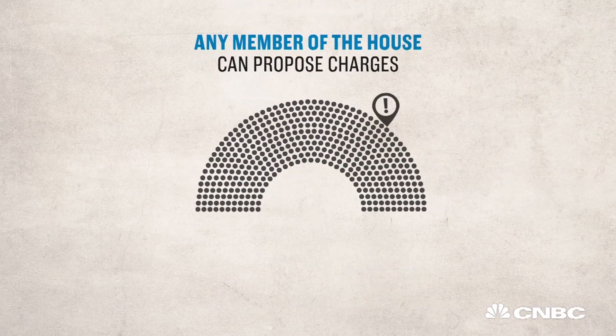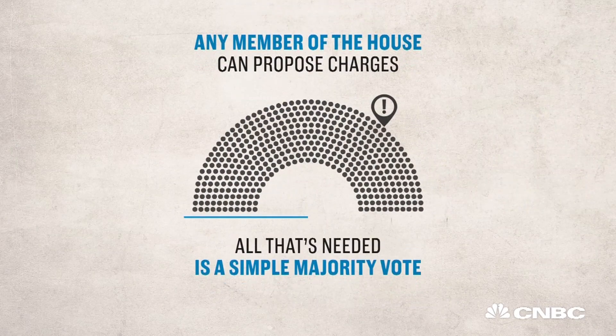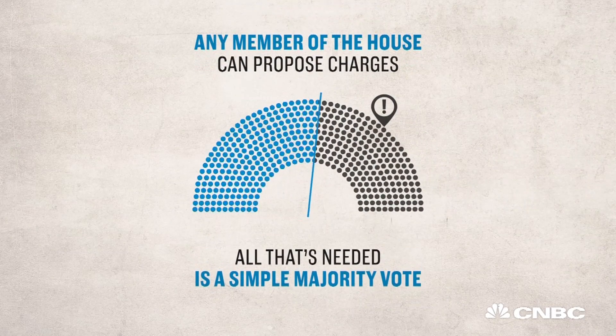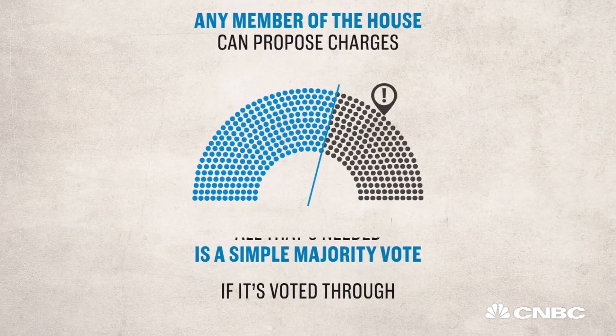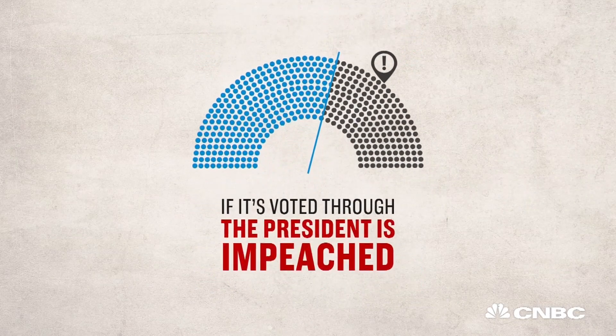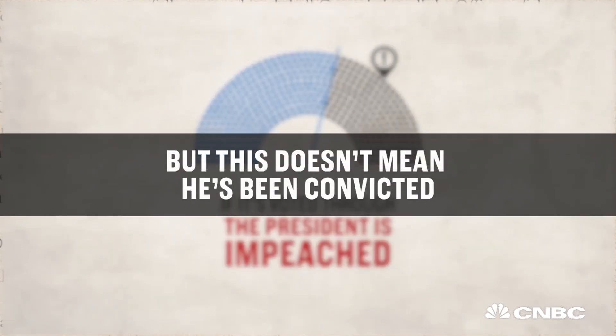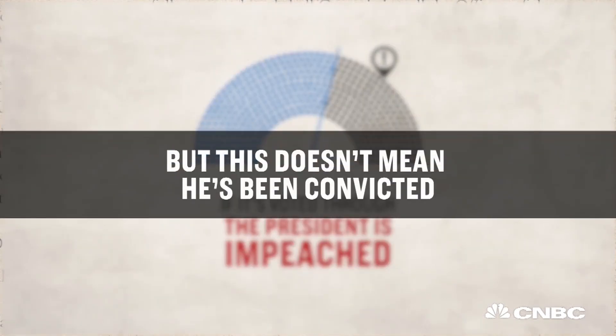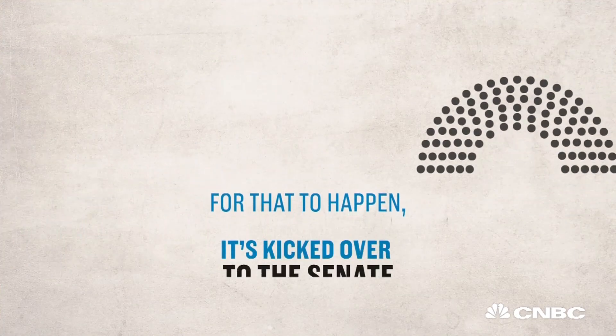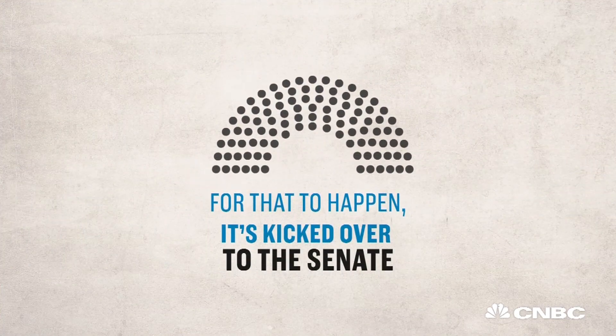Any member of the House can propose charges. All that's needed is a simple majority vote. If it's voted through, the President is impeached. But this doesn't yet mean he's been convicted. For that to happen, it's kicked over to the Senate.